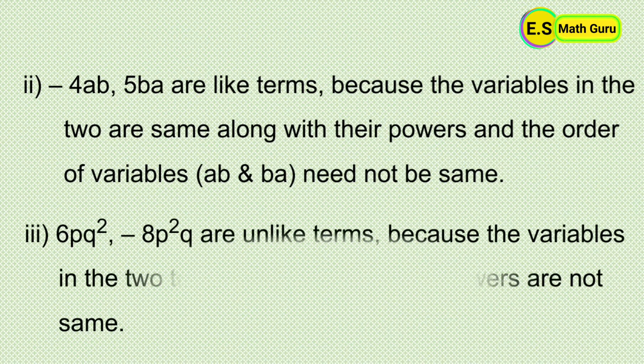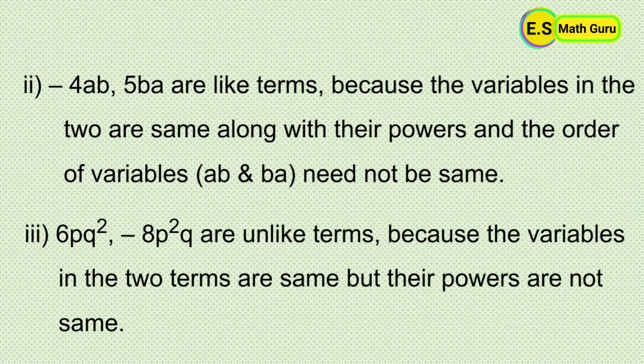Next, 6pq squared and minus 8p squared cube are unlike terms because the variables in the two terms are the same but their powers are not the same.